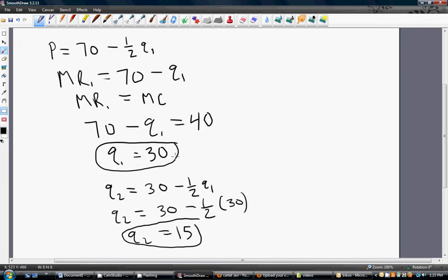So in our Stackelberg solution, firm 1, the first mover, produces twice as much output as the following firm. And this is a standard property of Stackelberg problems when you have both firms having the same cost structure.